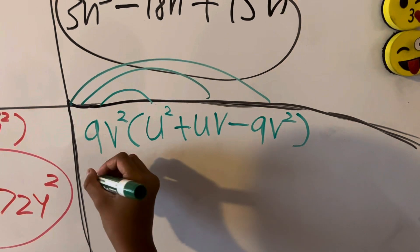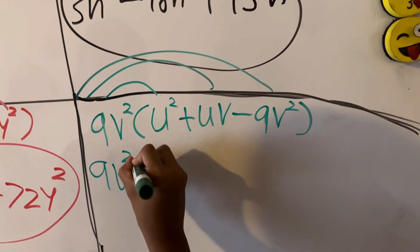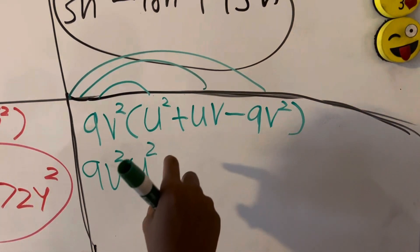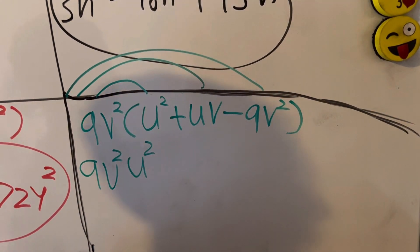So we're just going to have 9v squared times u squared. Like that. 9v squared times u times v.